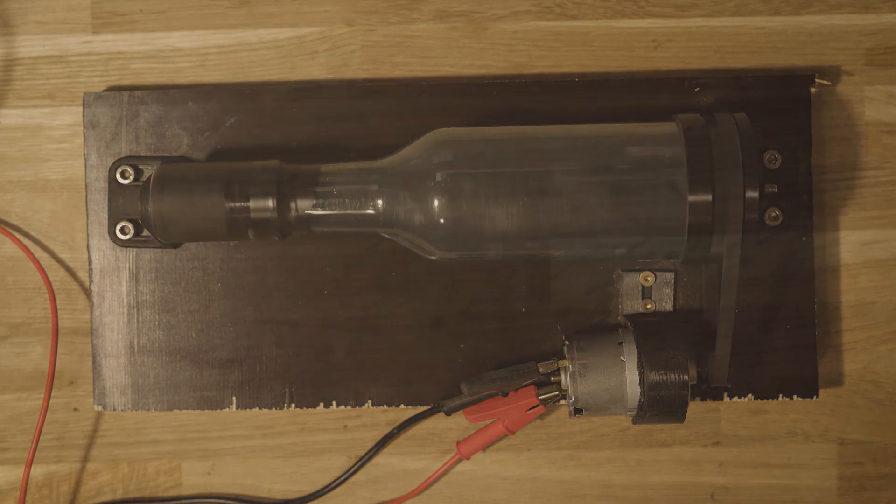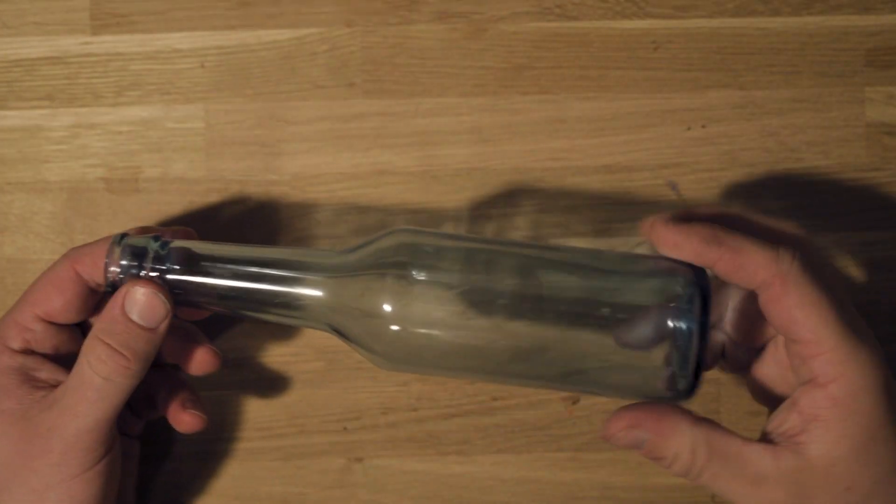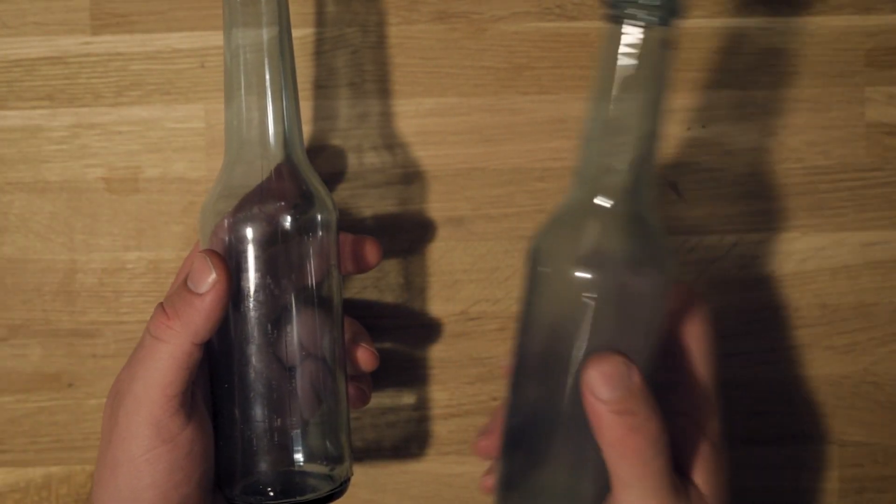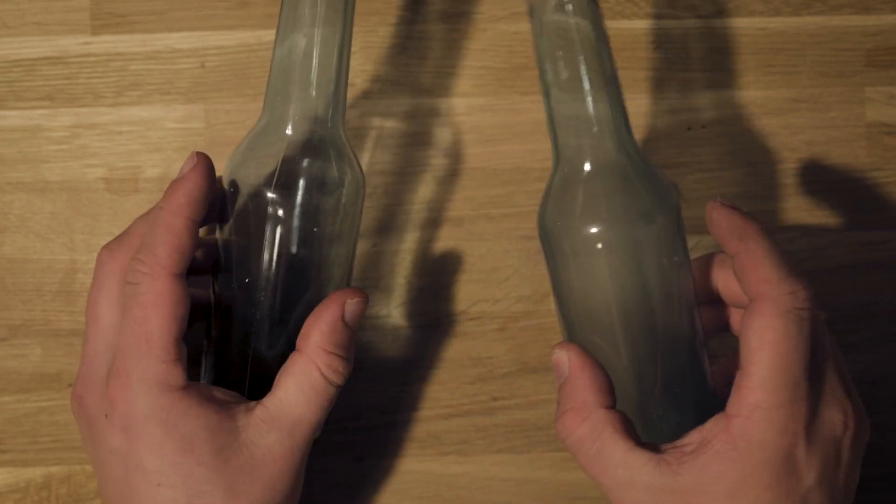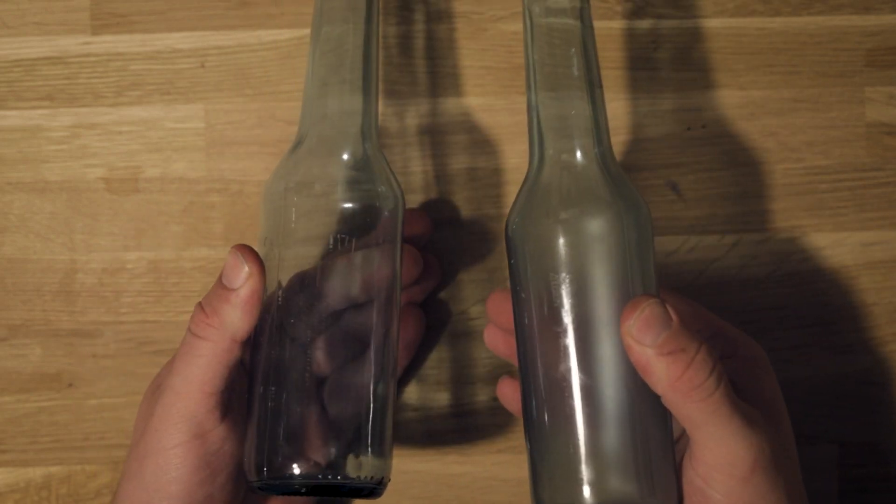And here is a comparison of a bottle before and after it has been sanded on the inside. The purpose of this sanding is to make the light being spread more evenly when it is illuminated from the inside.